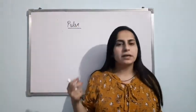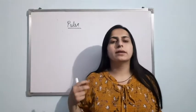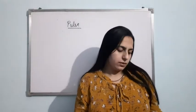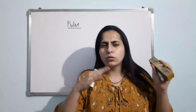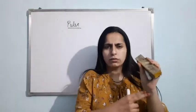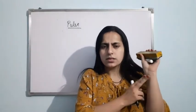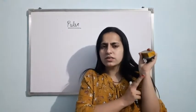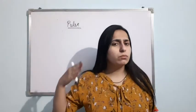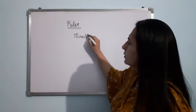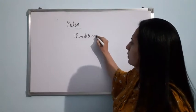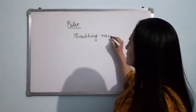If you place your middle finger and your index finger on the left wrist like this, you can feel there is a throbbing movement — an upward and downward movement. You might have felt this. Just keep your fingers here and you can feel that throbbing movement. That throbbing movement is known as Pulse.